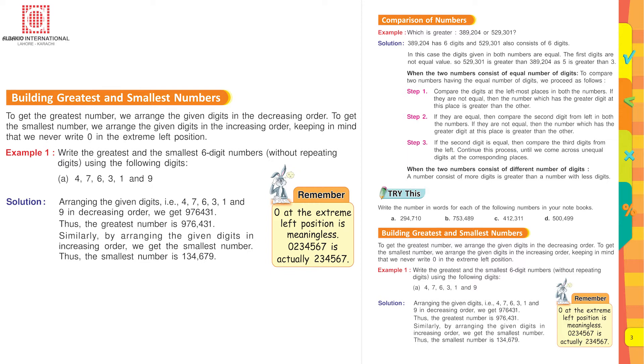Now how to build greatest and smallest numbers? To get the greatest number we arrange the given digits in the decreasing order. To get the smallest number we arrange the given digits in the increasing order. Keeping in mind that we never write 0 in the extreme left position. Example 1. Write the greatest and smallest 6 digit numbers without repeating digits using the following digits.